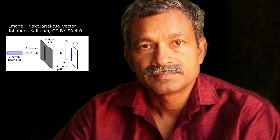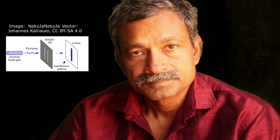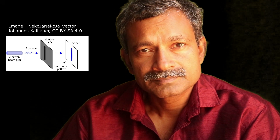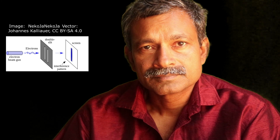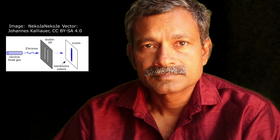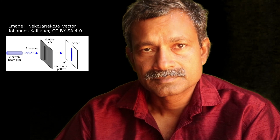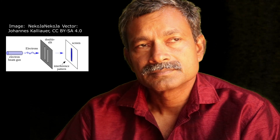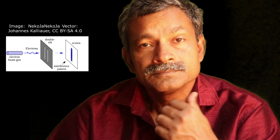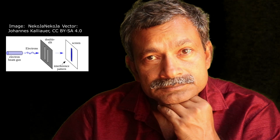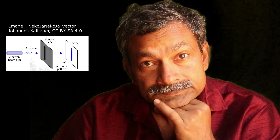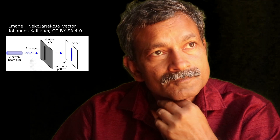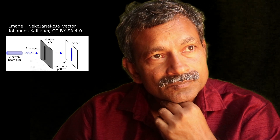In the double slit experiment, the observer effect refers to the phenomenon where the act of measuring or interacting with the quantum system, like an electron, can affect its outcome. Specifically, in this experiment, it describes how observing which slit an electron passes through changes the interference pattern observed on the screen. Here's a breakdown.